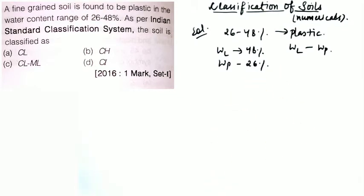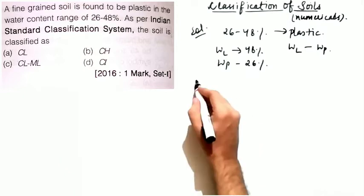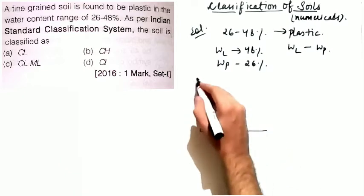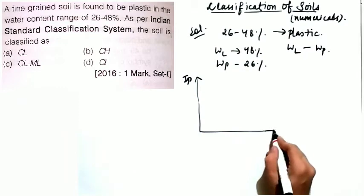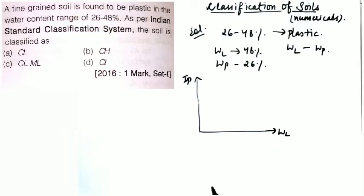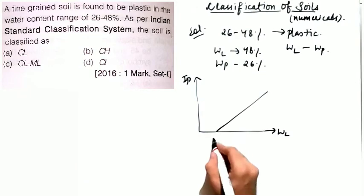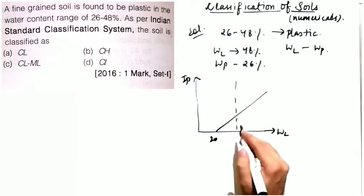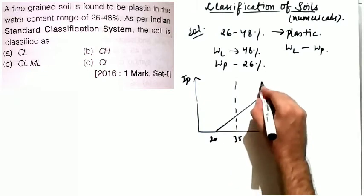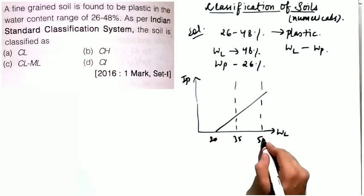You need liquid limit and plasticity index to classify any soil as per the ISC system. Let us draw the plasticity chart — this is IP on the y-axis and liquid limit on the x-axis. The A-line begins from 20; key values are 35 and 50 on the liquid limit axis.